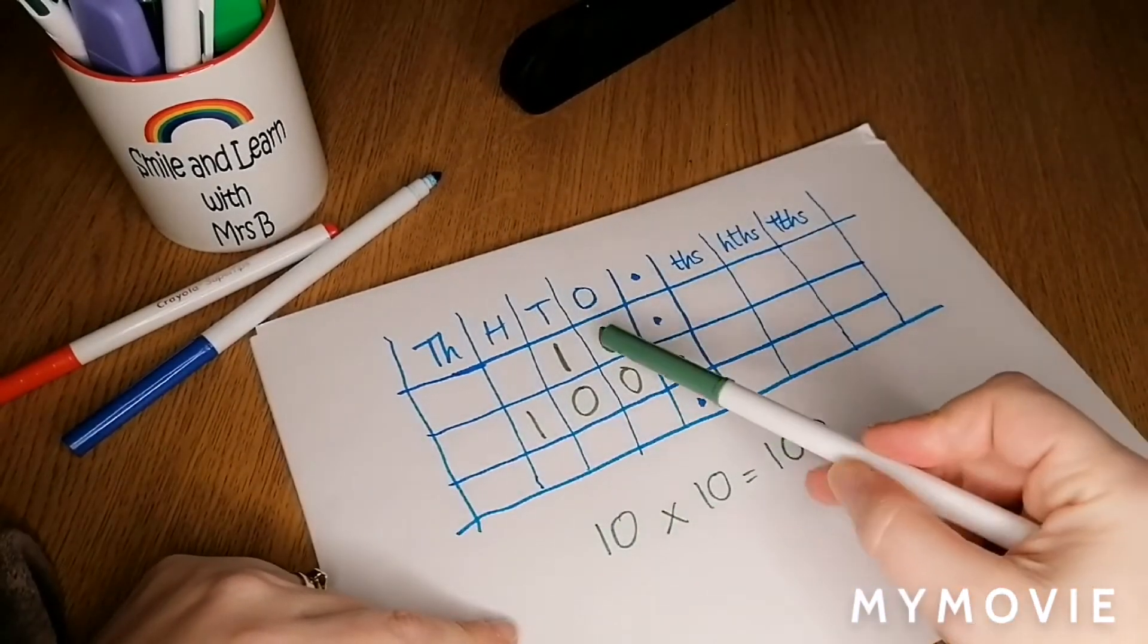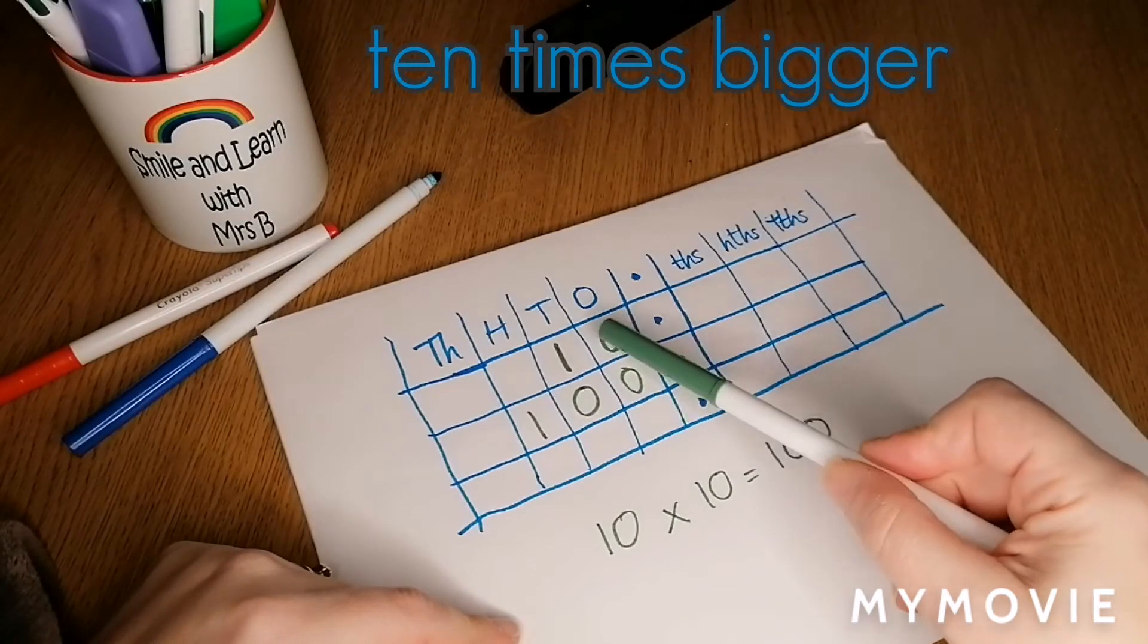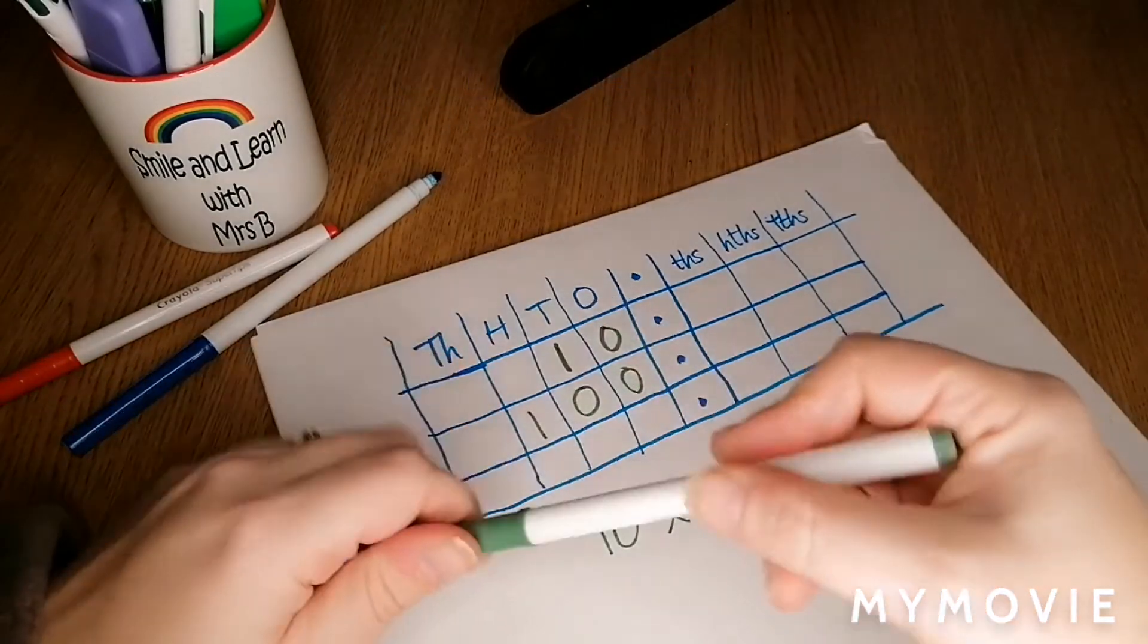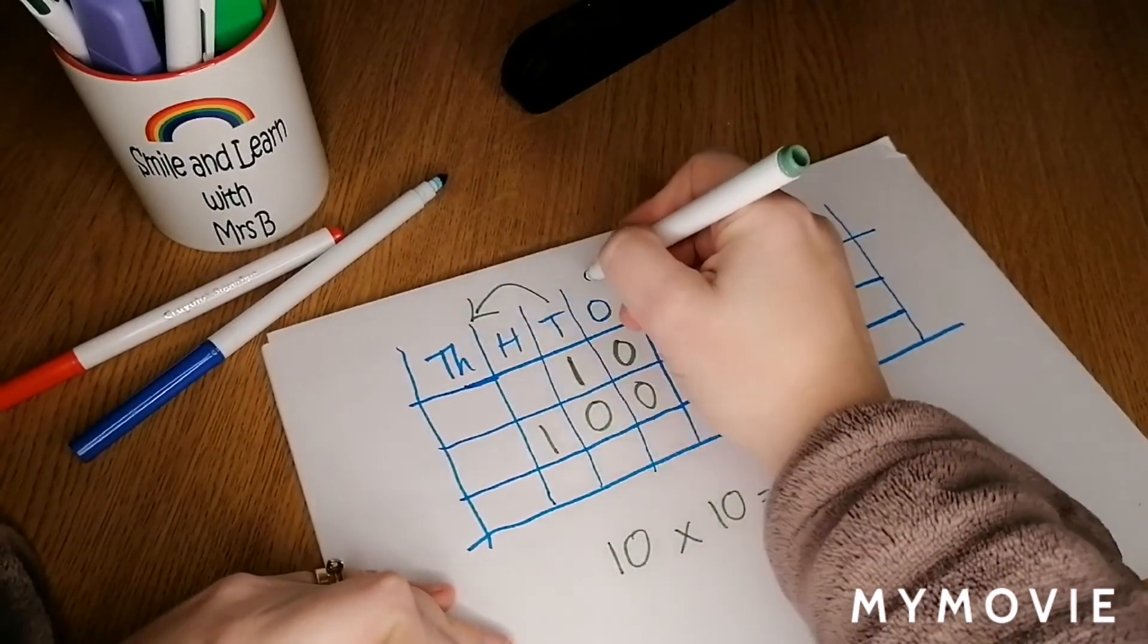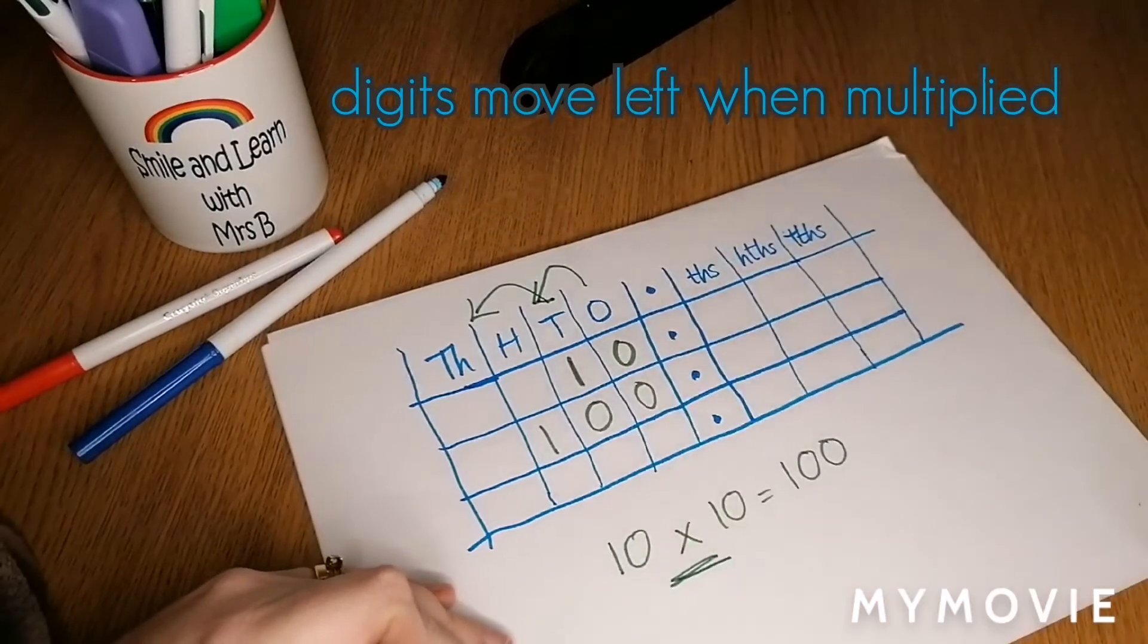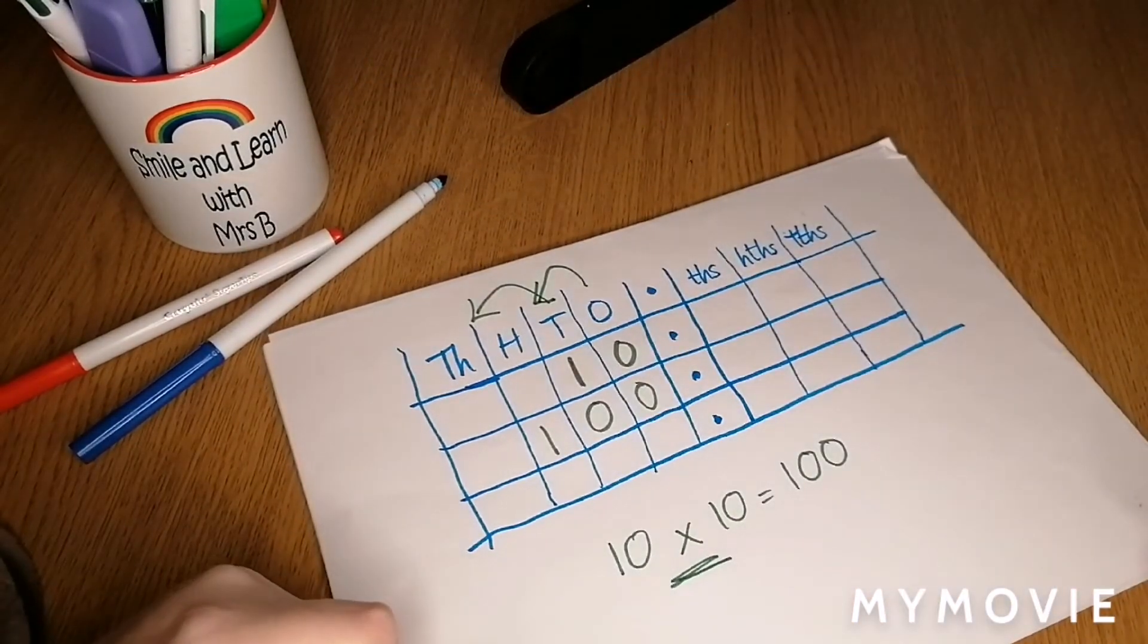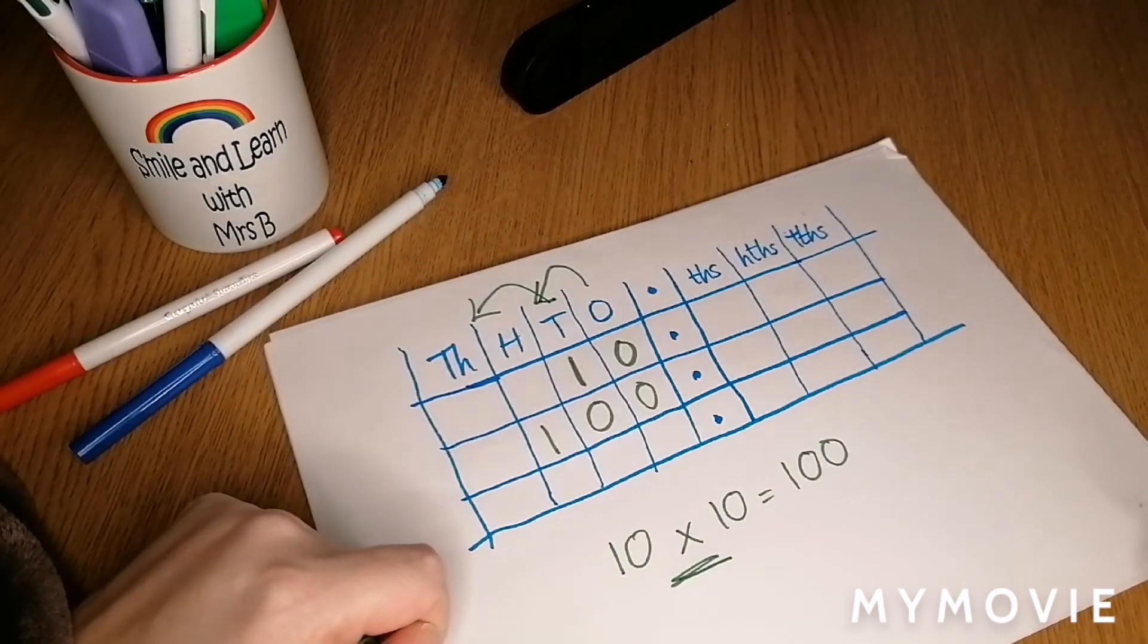What we can see has happened to the number 10: it's got bigger, it's 10 times bigger. We've got this extra zero here. What's happened is that those numbers have moved one place to the left. That happens when we multiply a number—the digits jump one place to the left.